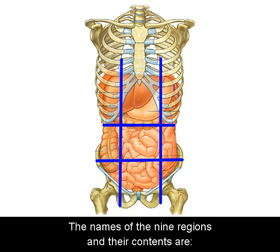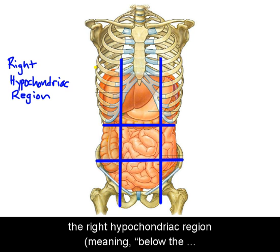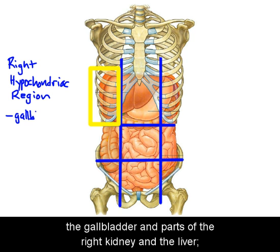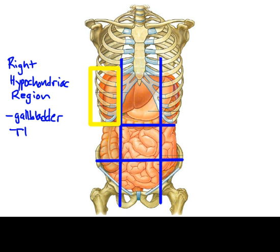The names of the nine regions and their contents are: the right hypochondriac region — meaning below the cartilage, a reference to the rib cartilage — which contains the gallbladder and parts of the right kidney and the liver.